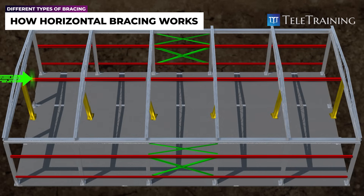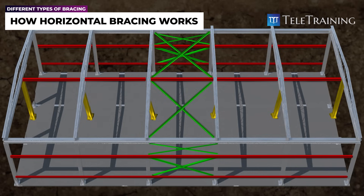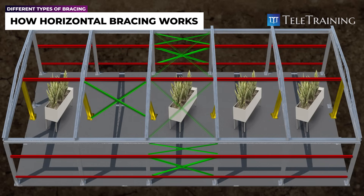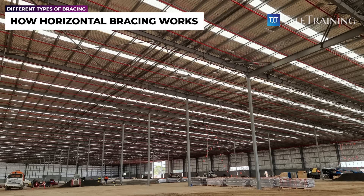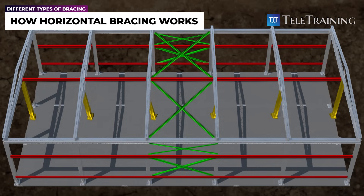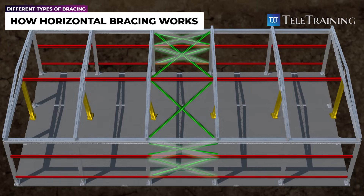To transfer lateral loads from the central columns and tie beams to the vertical bracing in the wall, cross-bracing needs to be installed horizontally in the roof. Alternatively, vertical bracing can be installed between the central line of columns, however this will take up space in the building. In this example, a combination of both methods has been used. Let's understand how horizontal bracing works with vertical bracing to withstand lateral loads.